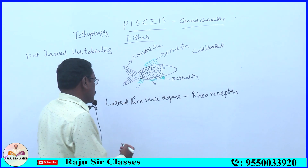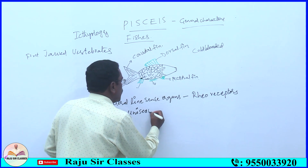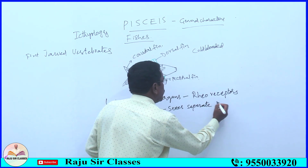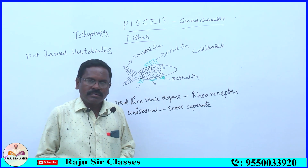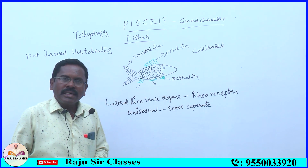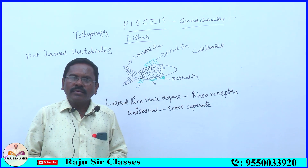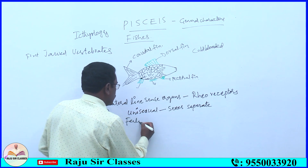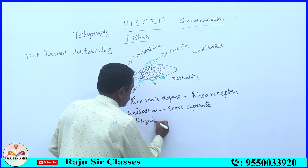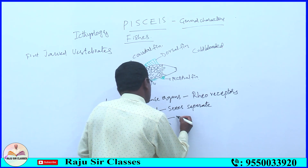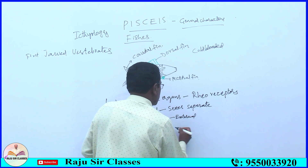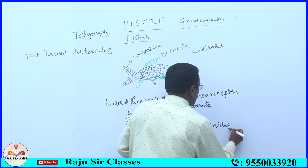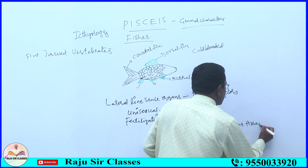Next: reproduction. Fishes are unisexual organisms — sexes are separate, meaning only one reproductive system is present in one organism. These are also called dioecious. Fertilization is either external or internal. In cartilaginous fishes, fertilization is internal because claspers are present — the wall of the cloaca is eversible and extends to form a copulatory organ called claspers.